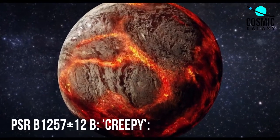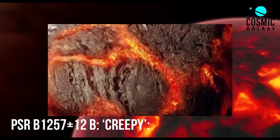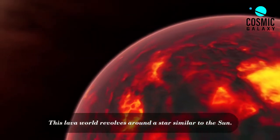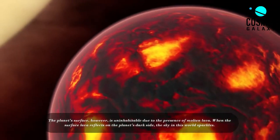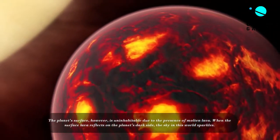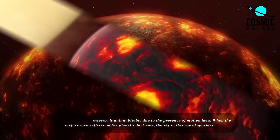Number 8, 55can3e, A Lava Planet. This lava world revolves around a star similar to the Sun. The planet's surface, however, is uninhabitable due to the presence of molten lava. When the surface lava reflects on the planet's dark side, the sky in this world sparkles.